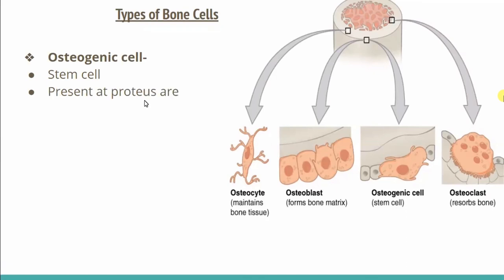This stem cell is shown here. In this structure, if we remove the bone, then we have the outer side present — the outer covering is present.